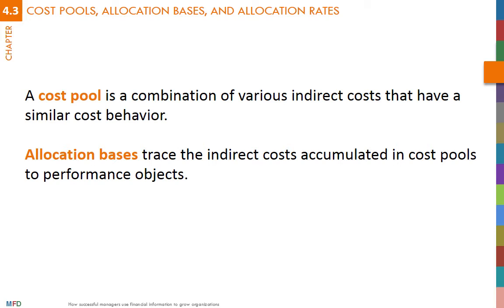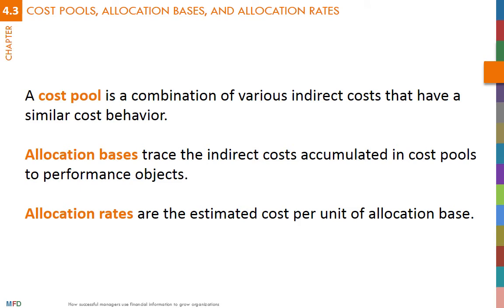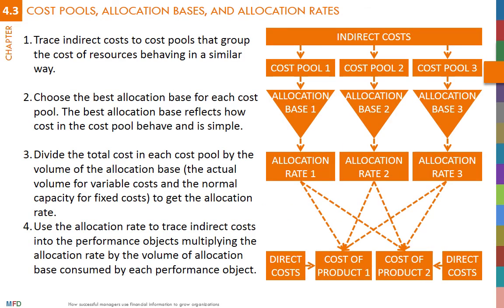Once indirect costs have been organized into cost pools and allocation bases for each cost pool have been selected, the final step is to calculate allocation rates. This is done by dividing the amount of cost in a cost pool by the amount of allocation base. For example, imagine that the indirect cost in a cost pool is 79,200 euros and the allocation base is the cost of materials that totaled 48,000 euros.